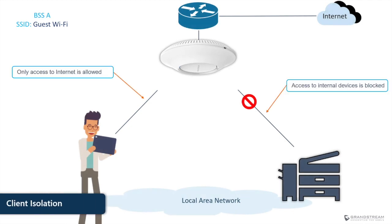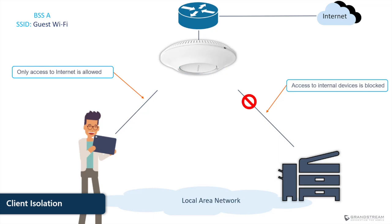When designing the wireless network into segments for organizational purposes, you dedicate a special SSID or VLAN for each group. The client isolation feature can restrict access to other devices in the same network. For example, client isolation can be enabled to block users connected to the guest Wi-Fi from reaching other resources in the local area network, allowing them to access only the internet.